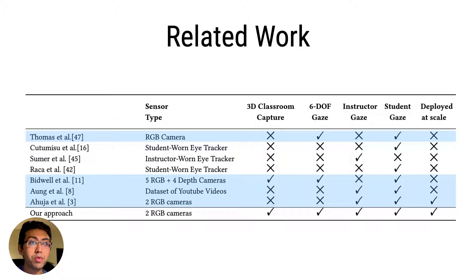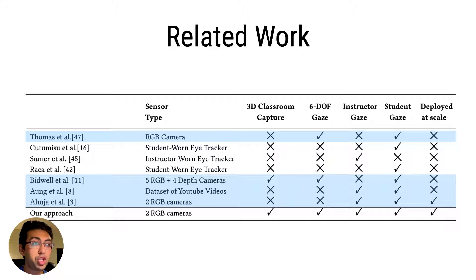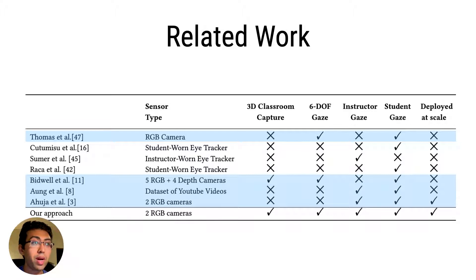The second approach is to instrument the environment with sensors such as depth and RGB cameras. These approaches are significantly less accurate compared to their wearable counterparts, but offer a comparatively cheap and scalable gaze tracking solution. As most of them do not capture the classroom in 3D, they can merely detect the gaze direction vector in isolation, rather than encoding what exactly students and instructors are gazing at.